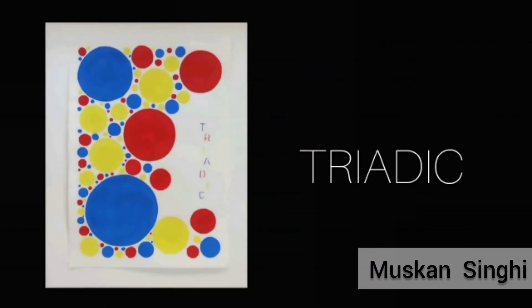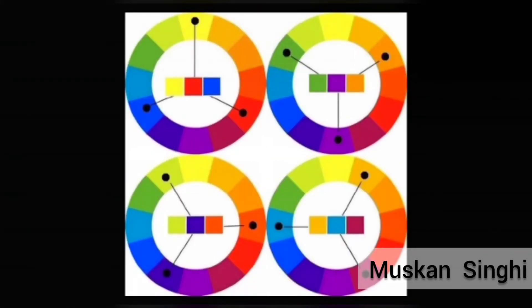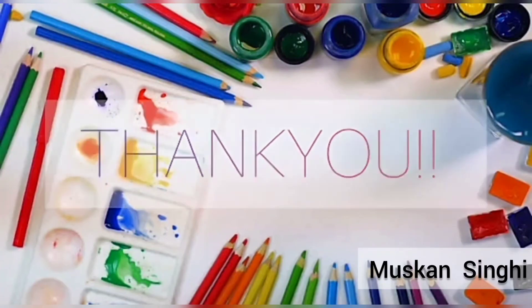What is the triadic color scheme? A triadic color scheme is comprised of three colors evenly spaced on the color wheel. The two most basic triadic palettes are the primary colors — red, blue, and yellow — and the secondary colors — orange, purple, and green. If we select any color from the color wheel, like purple, its triadic colors will be yellow-green and orange. The color scheme is deeper when applied this way.